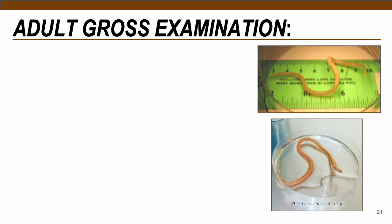Before discussing the adult worm, note that larval forms of Ascaris are also present, but they are usually not seen or passed in the stool because they develop into adults within the host itself. These are not typically identified through diagnostic procedures, and their morphology is relatively similar to the adult but smaller.